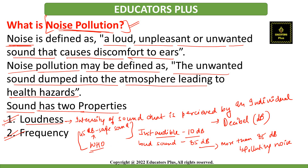The World Health Organization (WHO) has fixed 45 decibel as the safe noise level for cities. Apart from that, if you talk about India, big cities like Mumbai, New Delhi, Calcutta and Chennai usually register more than 90 decibel of noise.